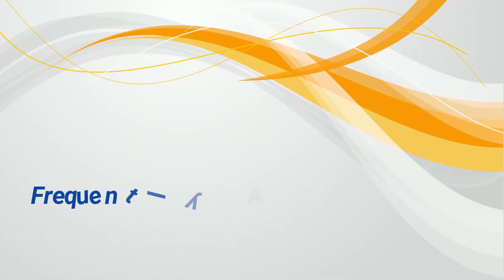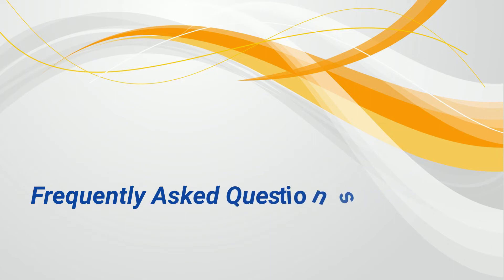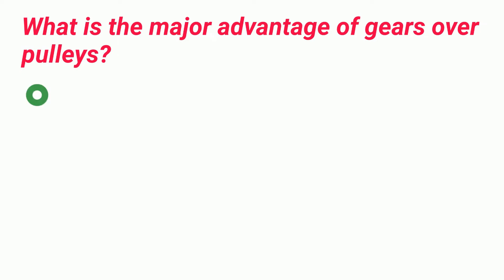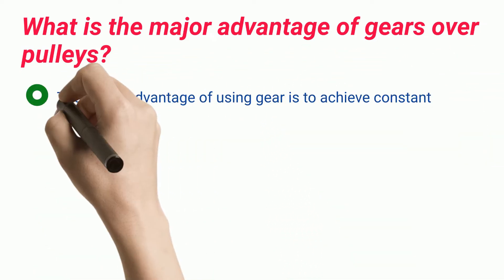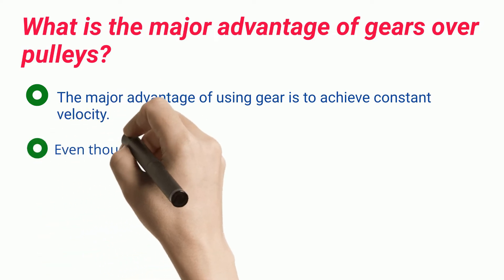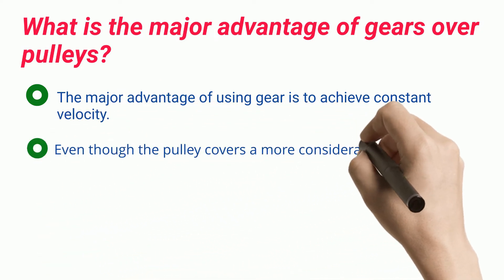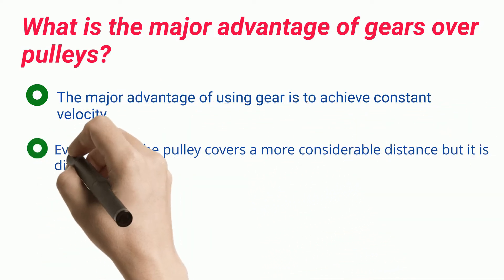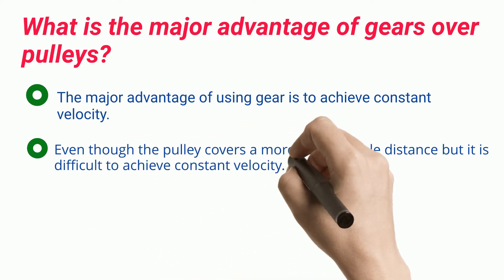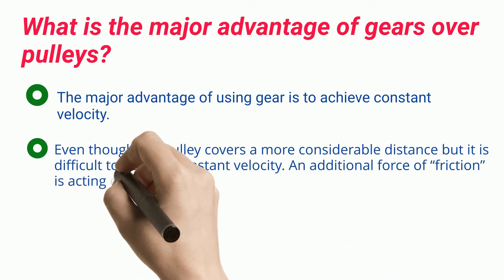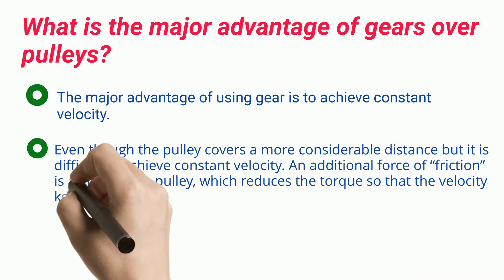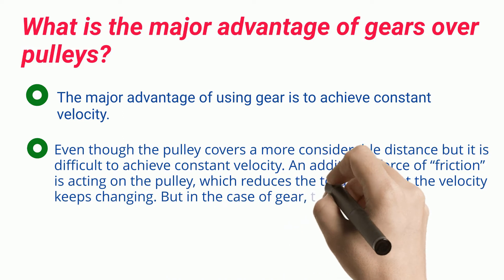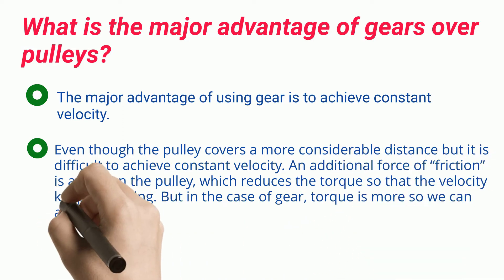What is the major advantage of gears over pulleys? The major advantage of using gear is to achieve constant velocity. Even though the pulley covers a more considerable distance, it is difficult to achieve constant velocity, as an additional friction force acts on the pulley, which reduces the torque so that velocity keeps changing. In the case of gear, torque is more, so we can achieve constant velocity.